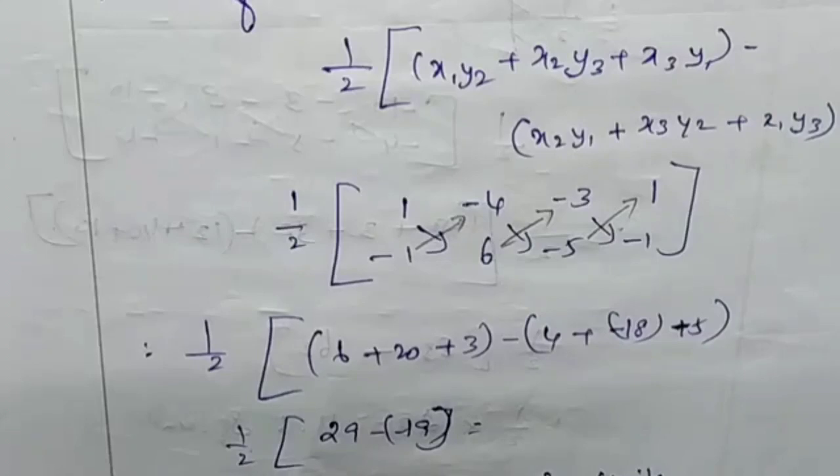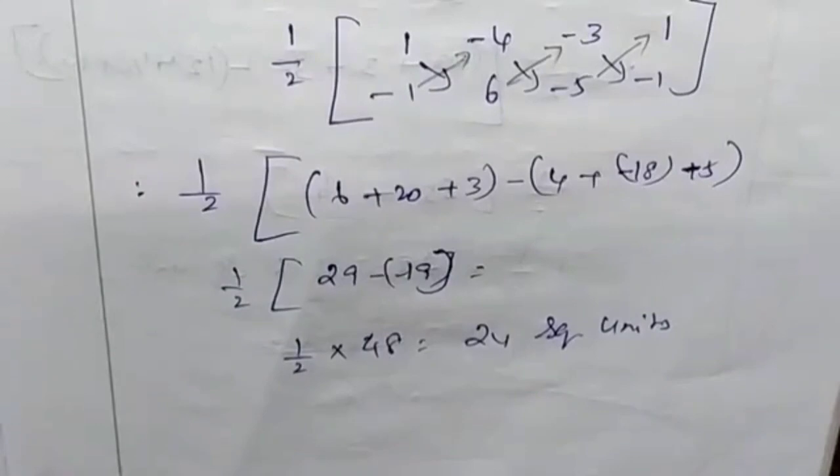What do we do? First of all, one by two: 6 plus 20 plus 3 minus 4 plus 18 minus 5. We have to simplify this. One by two: 29 minus 19.